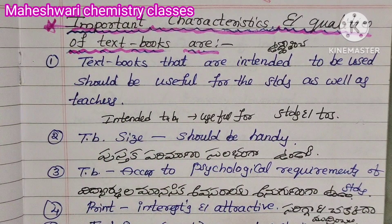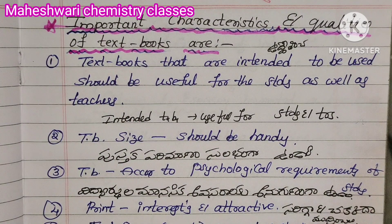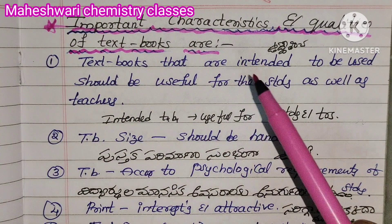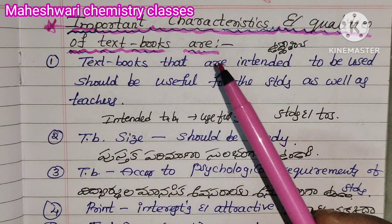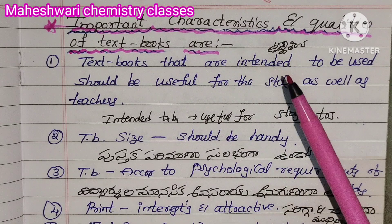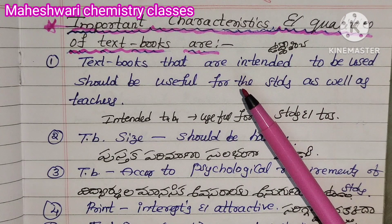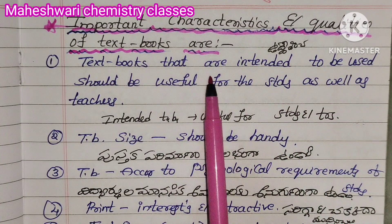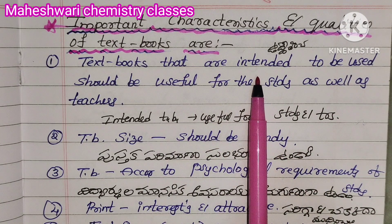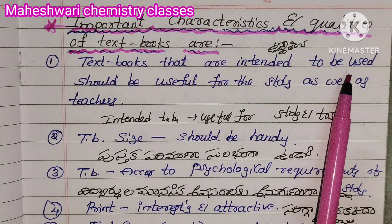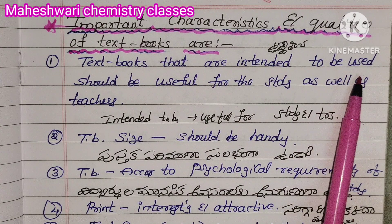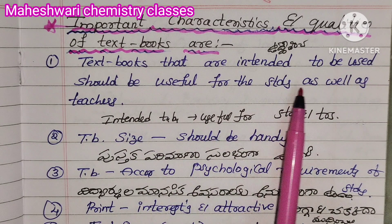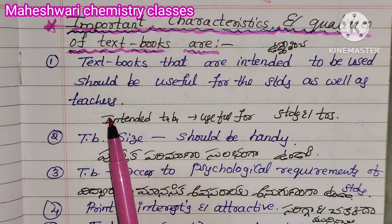Next topic: important characteristics and qualities of textbooks. Textbooks that are intended to be used should be useful for the students as well as teachers.